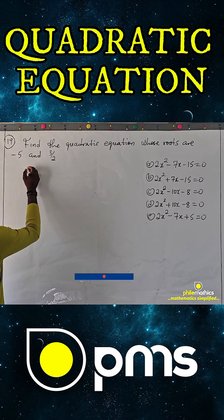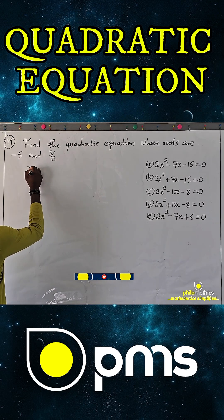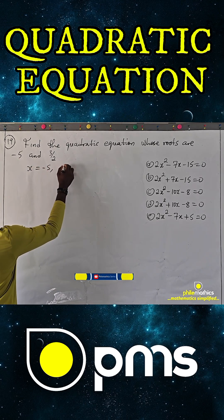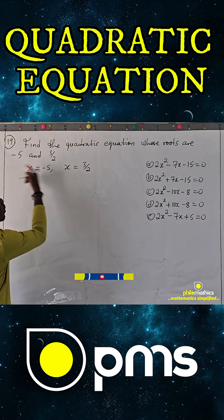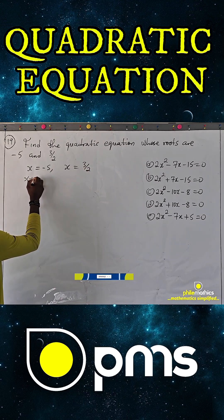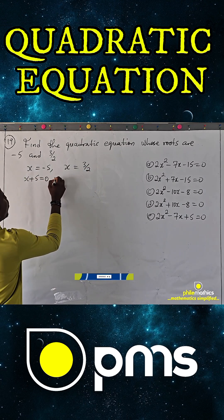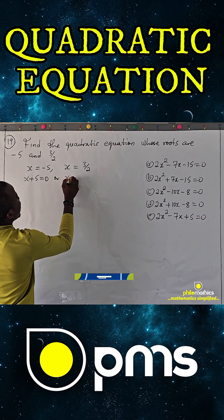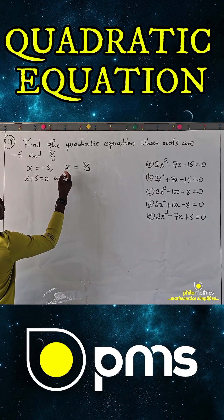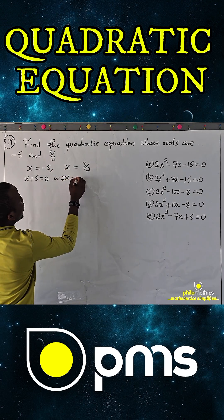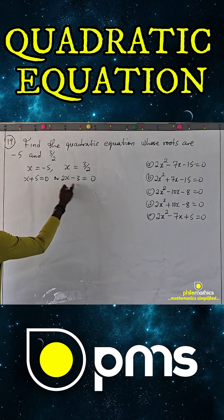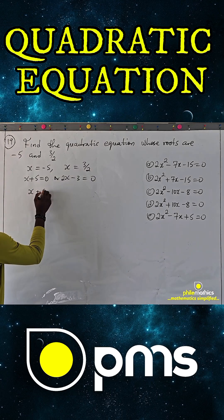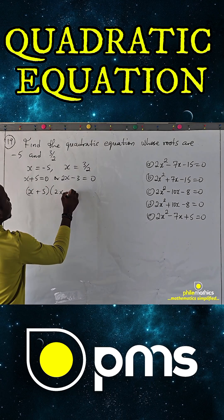So if we let x equal minus five, taking it to the left hand side we'll have x plus five equals zero. Similarly, if x equals three over two, multiplying through we get two x minus three equals zero. So we need to multiply the factors x plus five and two x minus three to get zero.